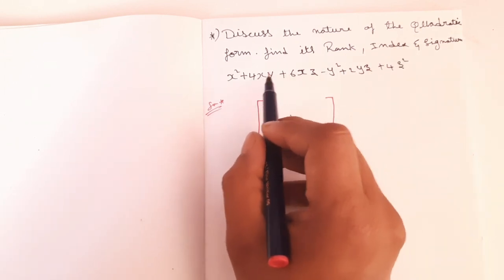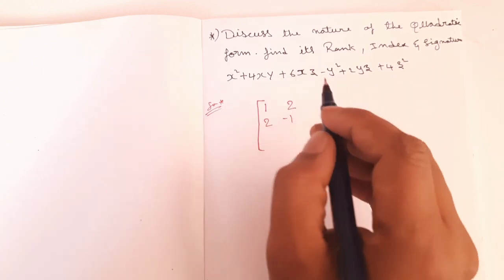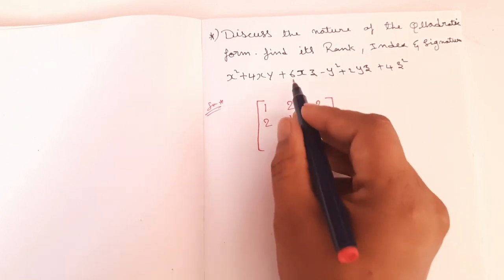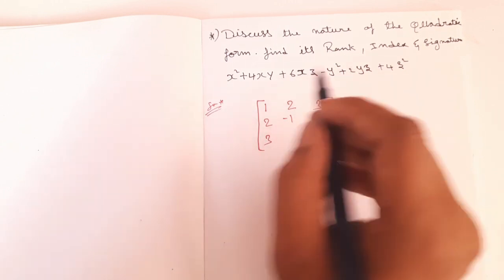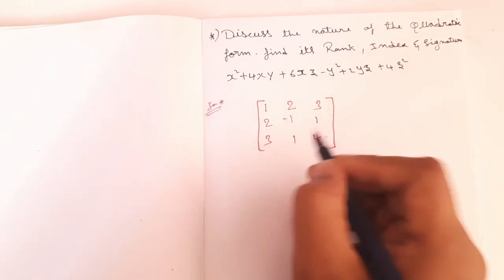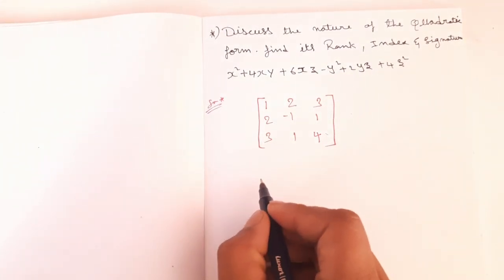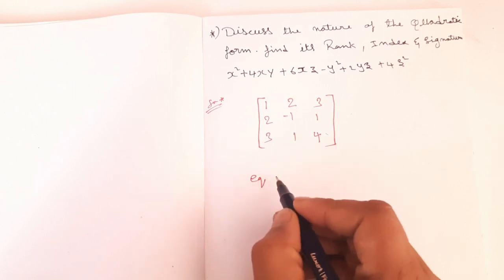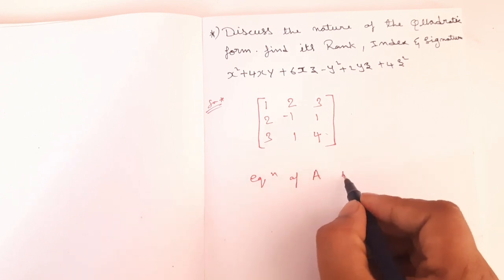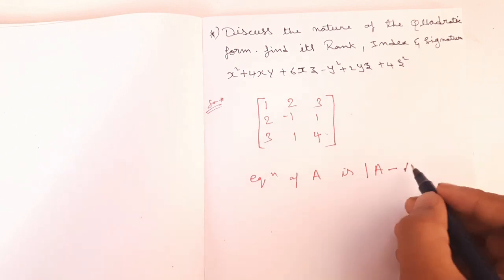So first, x1, xy is 1. Next, xz is 3. Next, y, z: 2, 1, 1. We will write these values. The characteristic equation of A is mod A minus lambda I.